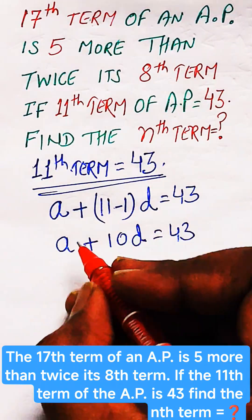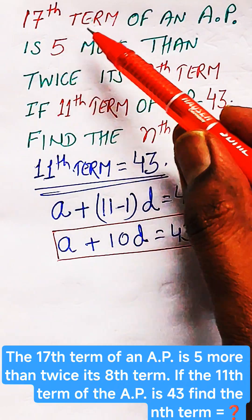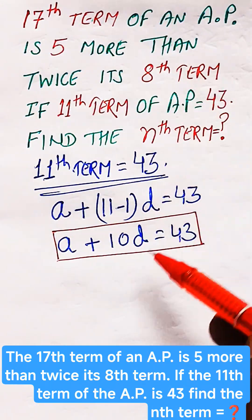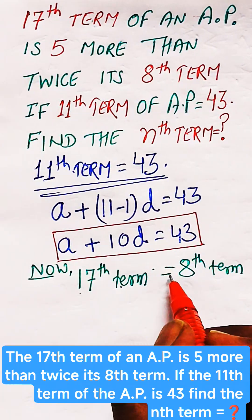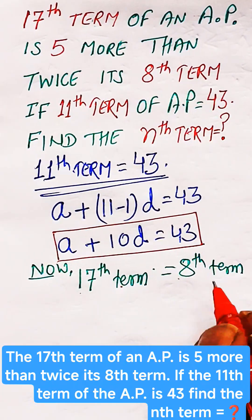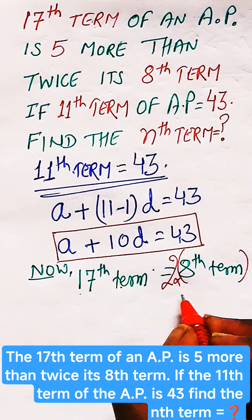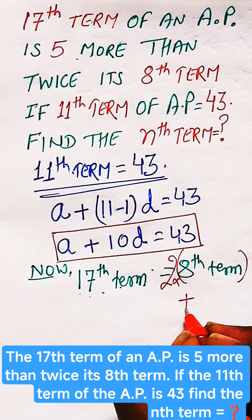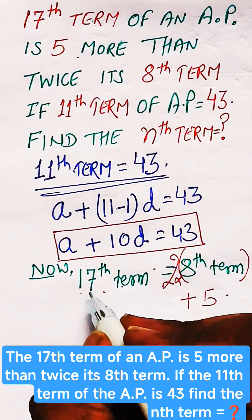Now the 17th term of the AP is 5 more than twice its 8th term. So the 17th term equals 2 times the 8th term. 2 will be multiplied into the 8th term, and the 17th term is 5 more, so we add 5. This will be further expanded.